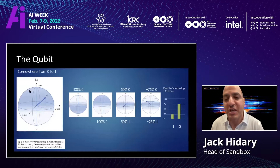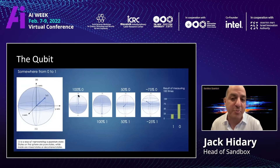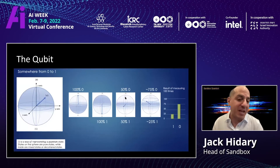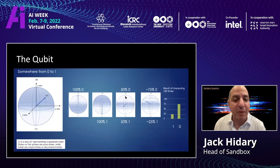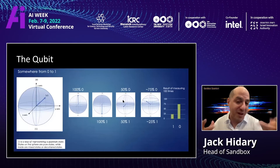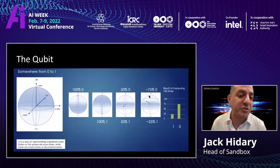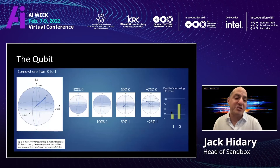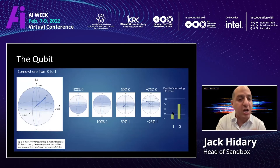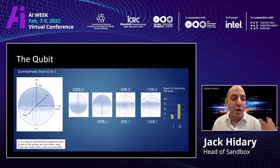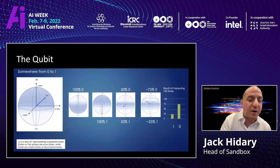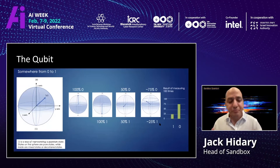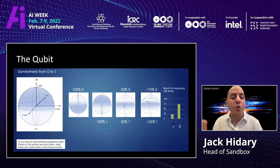If we look at this representation of the Bloch sphere, we can see that we can represent zero by that vector going up, one by the vector going down. We can have a 50-50 linear combination by applying a gate or operator called the Hadamard operator. We can also do rotations to get something like a 75-25 split, so that when we do hundreds and hundreds of measurements on this particular qubit, we generally come out with this distribution of ones and zeros over a period of time.